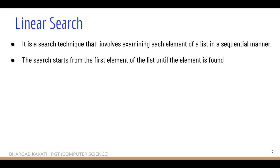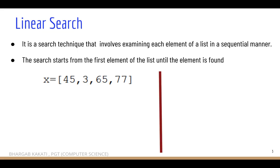In this search technique, the searching will start from the very first element of the list until the element to be searched is found. Let's try to understand it with the help of an example. Consider a list x with the elements 45, 3, 65, and 77. Now if I implement linear search on this particular list, how will it work?